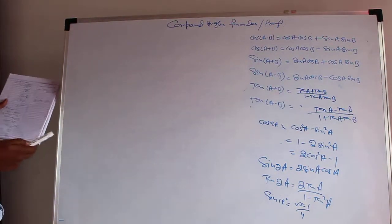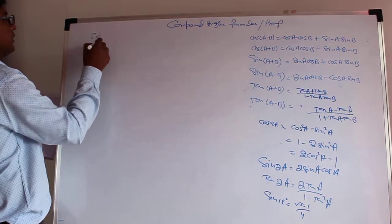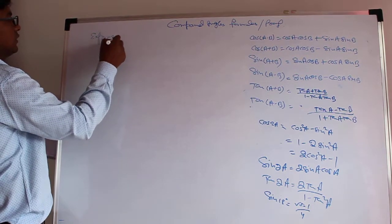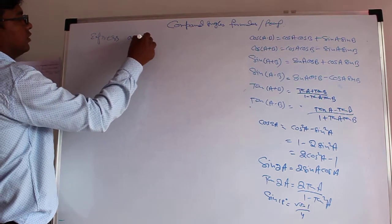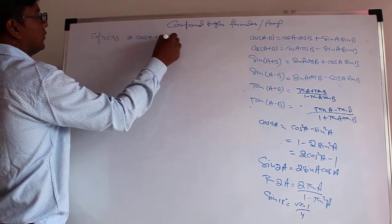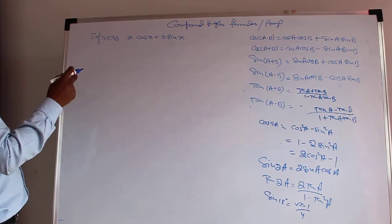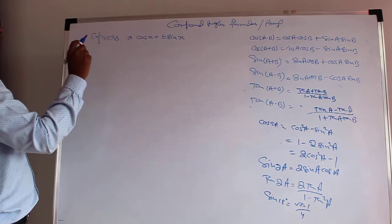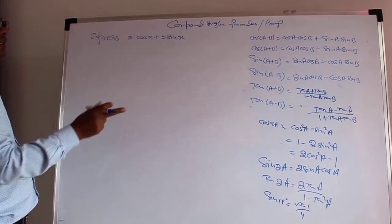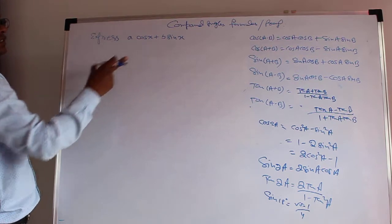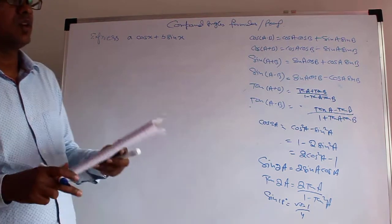The next heading I am going to discuss is expressing A cos x plus B sin x in a single trigonometric function, either sin or cos. We need to combine this in terms of sin or cos only.